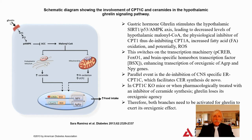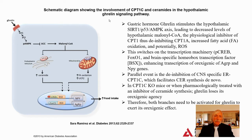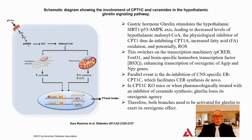Ghrelin is the orexigenic signaling pathway, and it occurs in the hypothalamus — again in the central nervous system. CPT1C is regulated by ceramide, and that impacts the ghrelin orexigenic or feeding response pathway, coming from gastric-synthesized ghrelin. Ghrelin moves in and turns on SIRT1. SIRT1 then activates P53. P53 allows for the phosphorylation of AMP kinase, and AMP kinase blocks acetyl-CoA carboxylase.